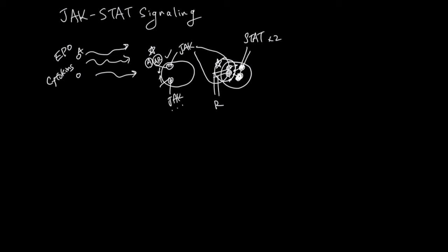And then the STAT would get activated by interacting with the JAK. Here are two receptors, two activated JAKs and two activated STATs. Activation happens with extra phosphate being added to that protein.